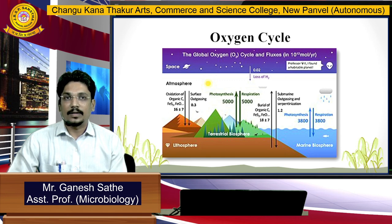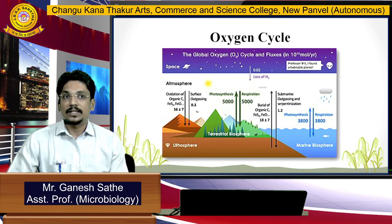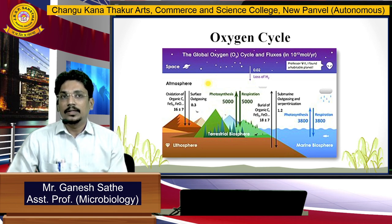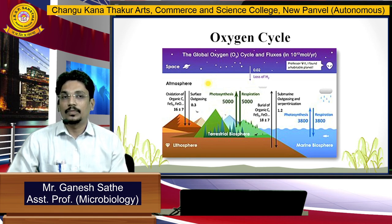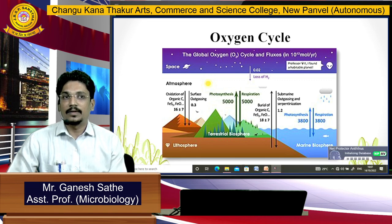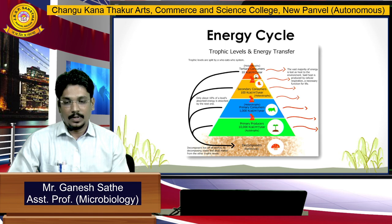Coming to the oxygen cycle — we use oxygen as a respiratory component, and it is distributed throughout your body with the help of hemoglobin. Who is responsible for oxygen production? The cyanobacteria. Earth's oceans have a diverse microbial load called cyanobacteria, which plays a very important role in the release of oxygen. That oxygen is transferred through air into our respiratory tract for our use.